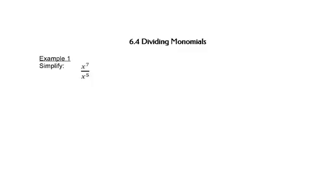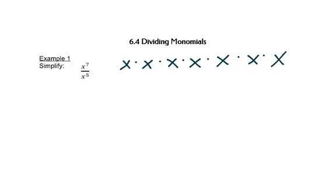Now we'll look at division and how it works. Remember that on the top, x to the 7th really means that we have x there 7 times. And on the bottom, we have x there 5 times.